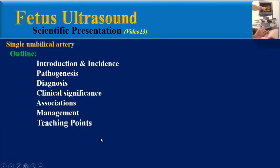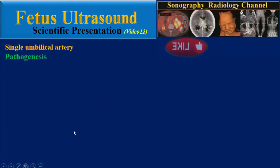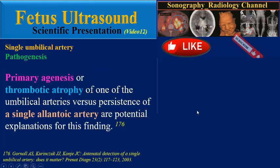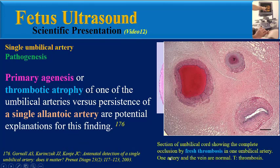Regarding pathogenesis, there are two potential explanations: primary artery agenesis or thrombotic atrophy of one of the umbilical arteries, versus persistence of a single allantoic artery. This pathologic section of an umbilical cord shows complete occlusion by fresh thrombosis in one umbilical artery, while the other artery and vein are normal.